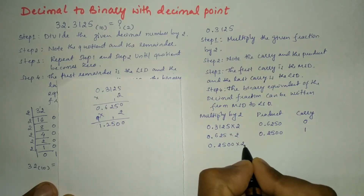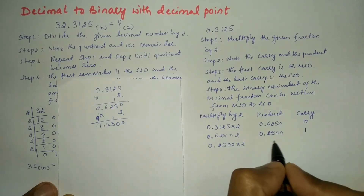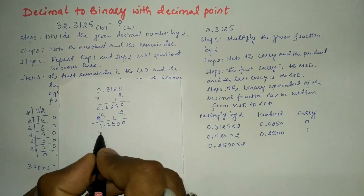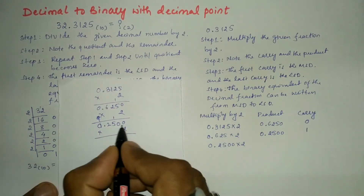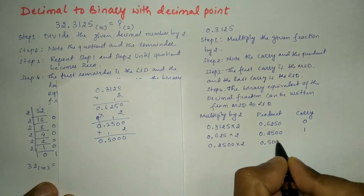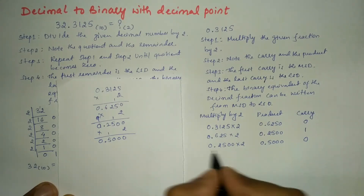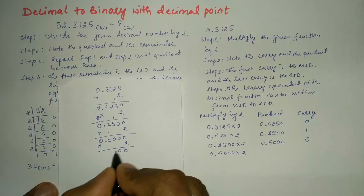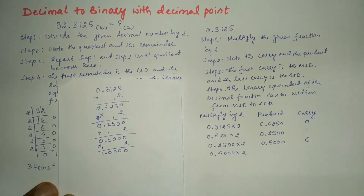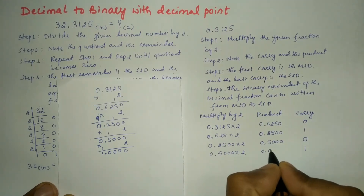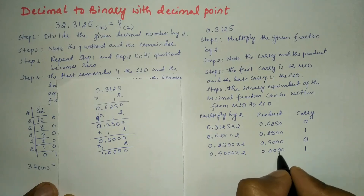0.2500 × 2 = 0.5000, carry is 0. In some situations the product may not become 0 — in that case we round off to some approximate digits after the decimal point. Next: 0.500 × 2 = 1.0000, carry is 1 and the fractional part becomes 0.0000, so we stop multiplying.